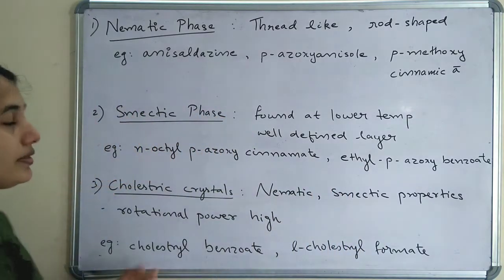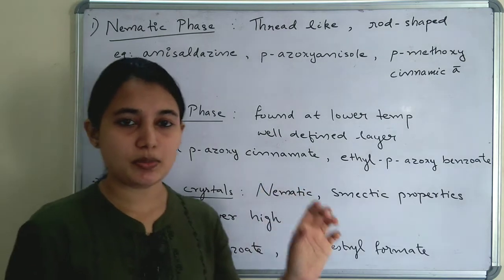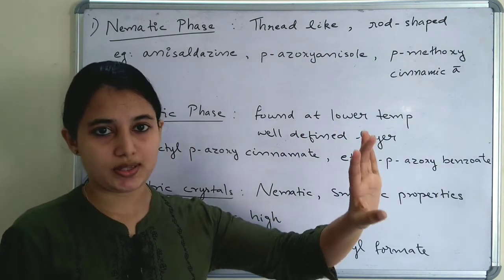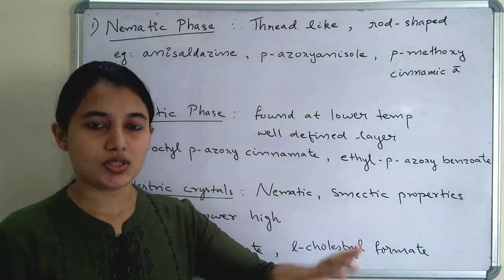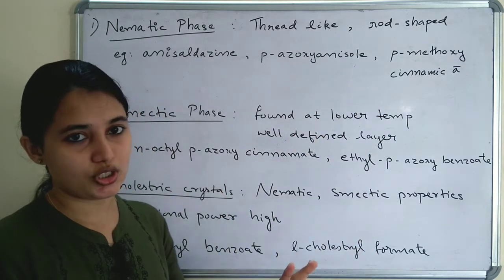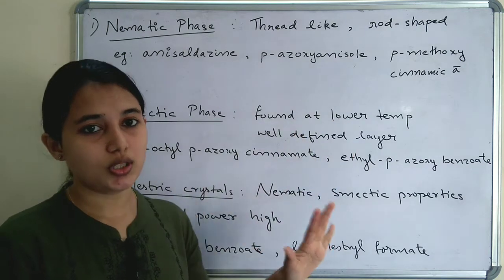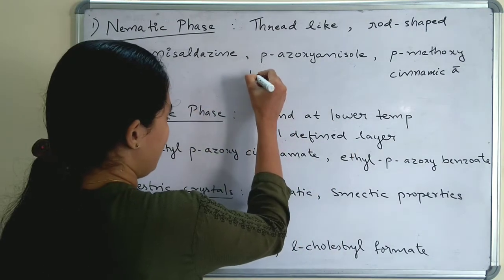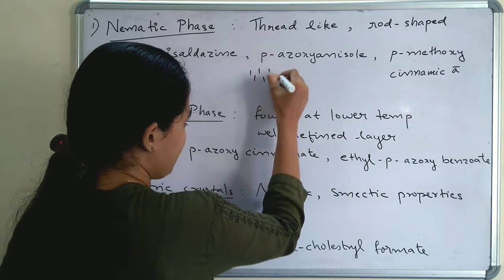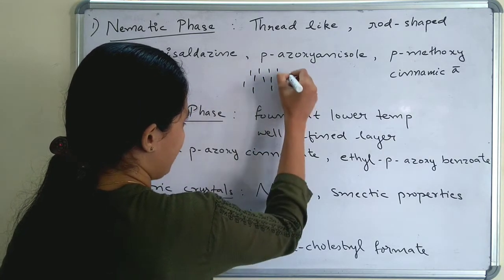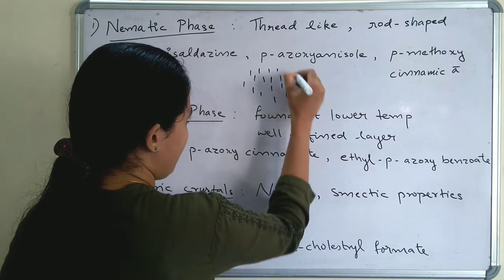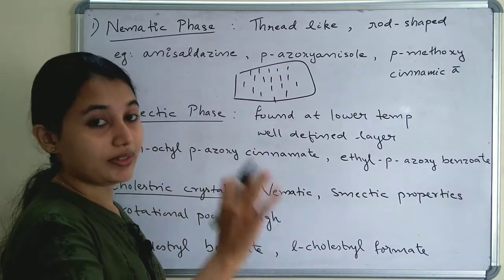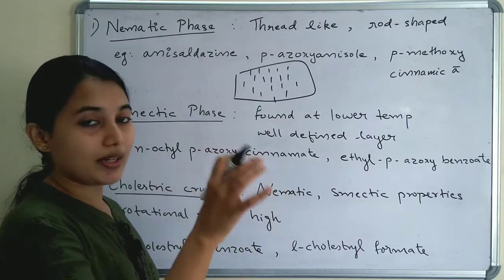The first type of liquid crystal is the nematic phase. Nematic means thread-like. In the nematic phase, the organic molecules are rod-shaped or thread-like in structure. There is no positional order in the nematic phase — the arrangement is almost parallel but without positional order. It has a thread-like structure.